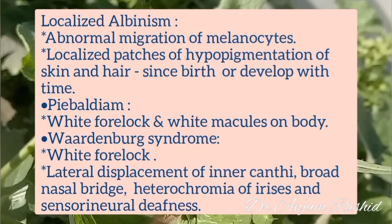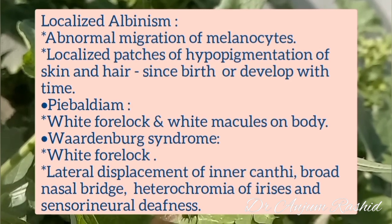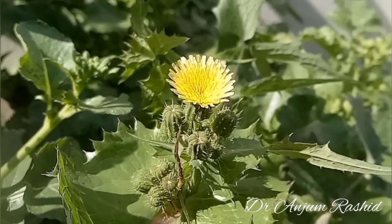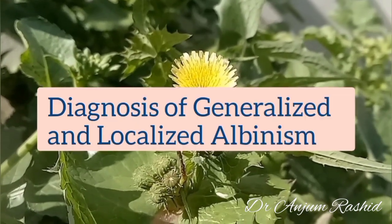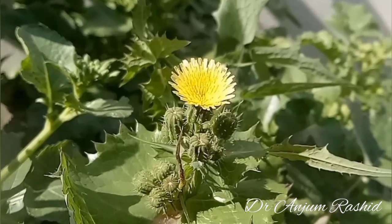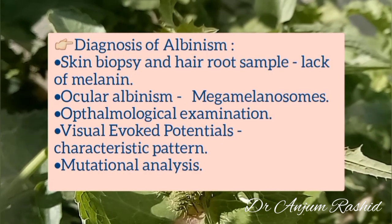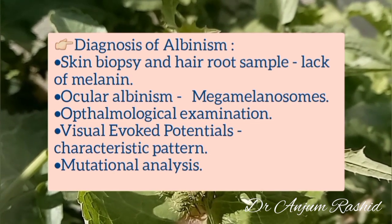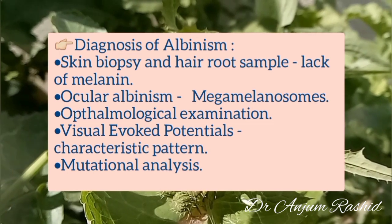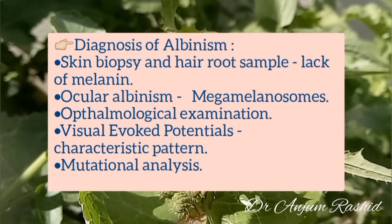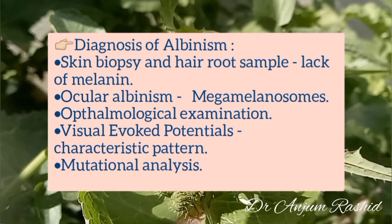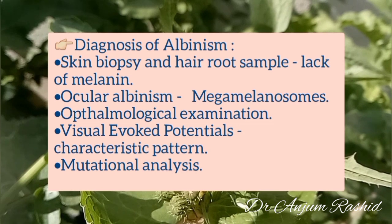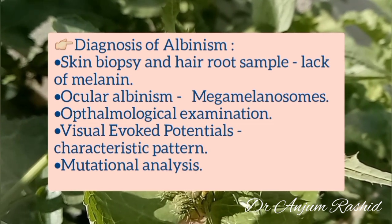For diagnosis of generalized and localized albinism, skin biopsy and hair root sample examination are required, revealing lack of melanin. In ocular albinism, megalomelanosomes are present. Ophthalmological examination is also required, and visual evoked potentials reveal a characteristic pattern. Mutational analysis studies should also be performed.